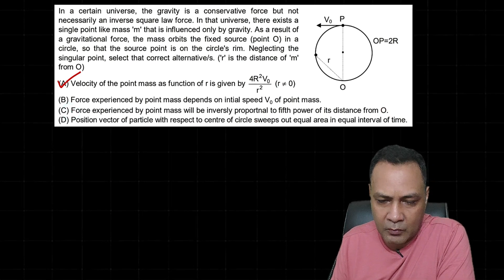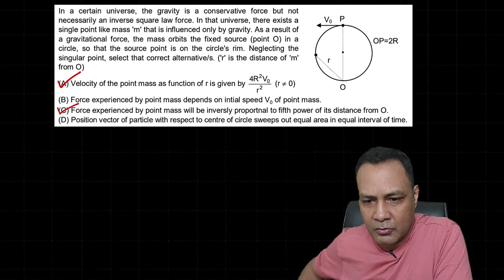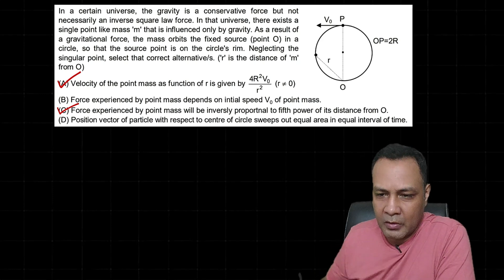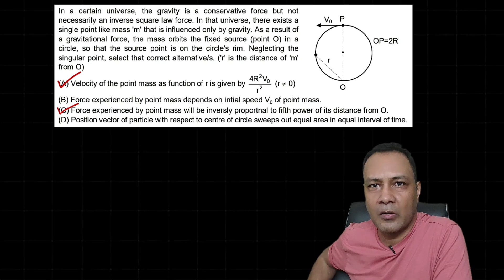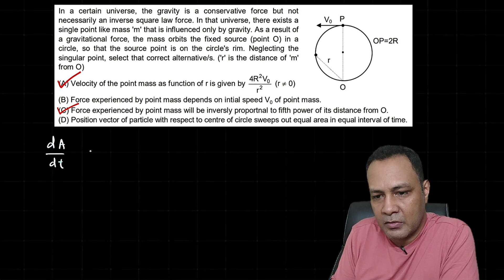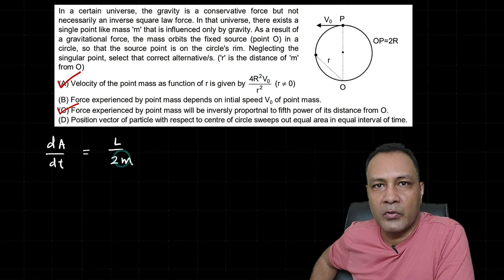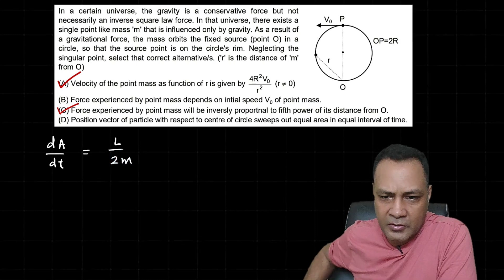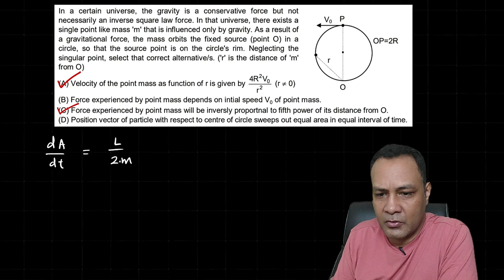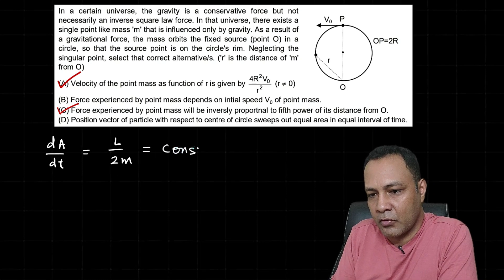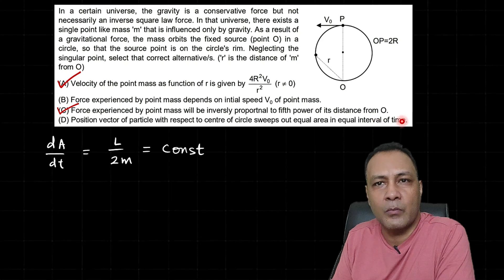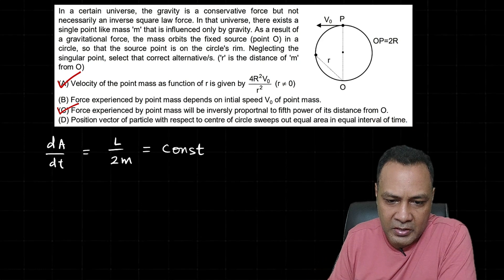Now option D: the position vector with respect to the center of force sweeps out equal areas in equal times — this is Kepler's second law, meaning aerial velocity is constant. This is always true in any central force motion, whether inverse square law or not, because aerial velocity dA/dt = L/2m. Since L is conserved in any central force motion and m is constant, dA/dt is also constant. So the position vector sweeps equal areas in equal time intervals, and option C is also correct.